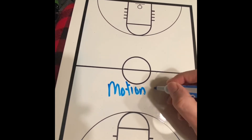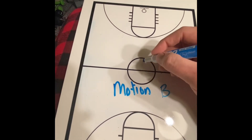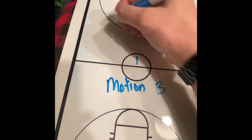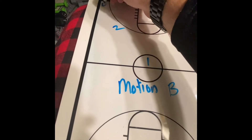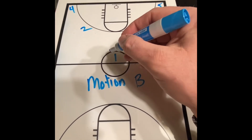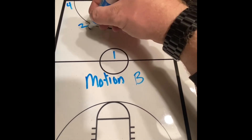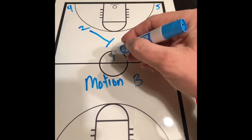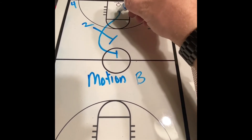This is our Motion B play — same exact setup as Motion A. You have one, two, three, four, number five. Once the point guard calls Motion B, go, number two is triggered to go and set the screen. Number one will go off of that screen down the center.